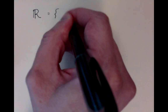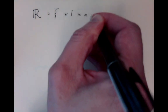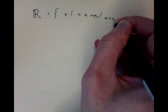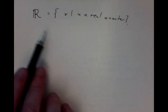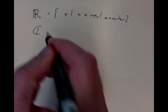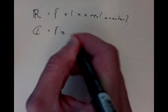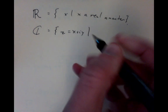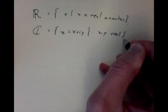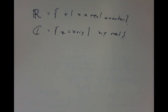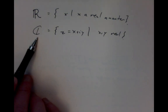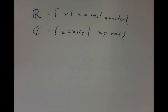It's traditional to write the set of all real numbers as ℝ (R with a double back). The set of all complex numbers ℂ is the set of numbers z = x + iy, where x and y are real. It's written as C with a slash through it, and ℝ with a double back on it is the traditional notation.